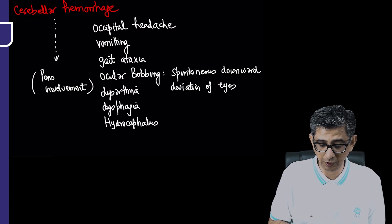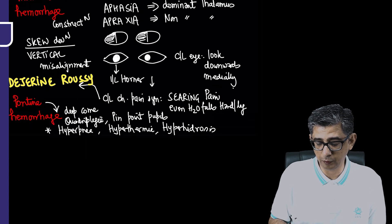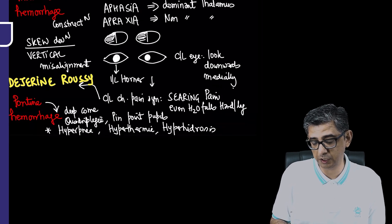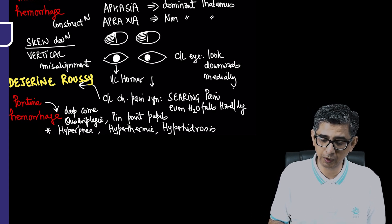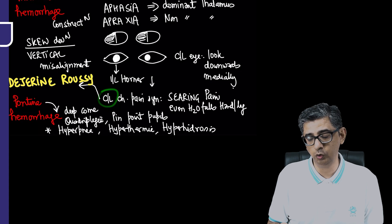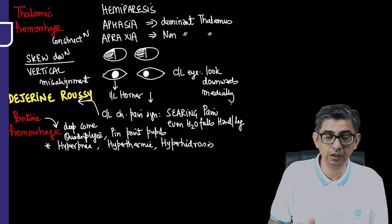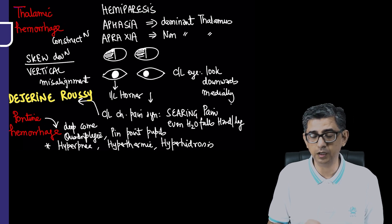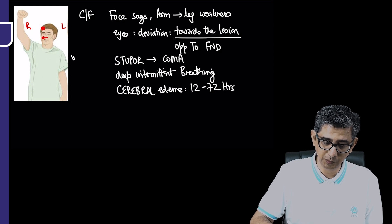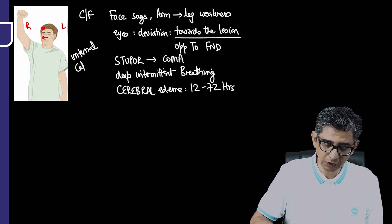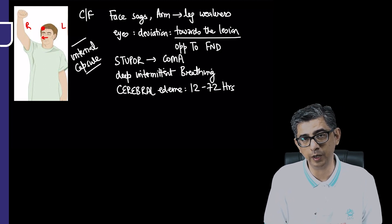In some questions they'll mention classical features like ocular bobbing, gait ataxia with headache in a hypertensive patient. When you pick up these words—hypertension, sudden onset headache, gait ataxia, ocular bobbing, brainstem involvement like dysarthria, dysphagia, can't talk or eat—think posterior bleed, cerebellar hemorrhage. If he talks about pinpoint pupils with hyperpnea, hyperthermia, hyperhydrosis, it's pontine bleed. For thalamic hemorrhage, he'll give chronic or acute presentation. Peculiarity is aphasia even with thalamic involvement. The standard presentation I've given describes internal capsule lesion.